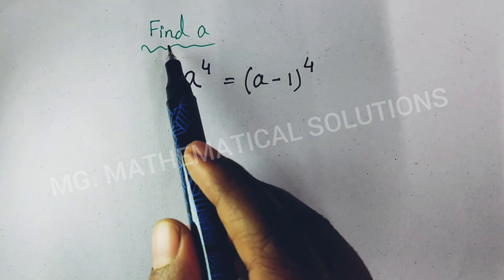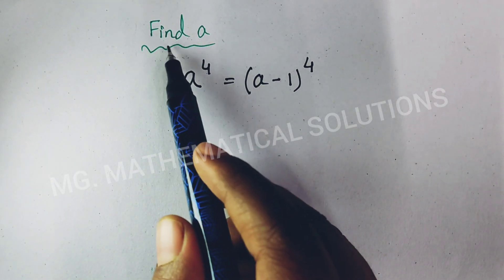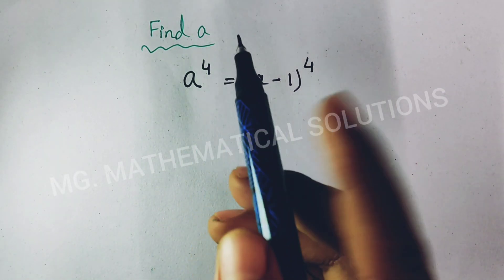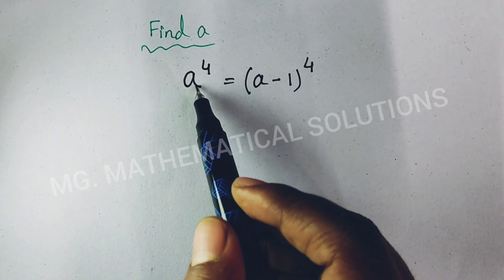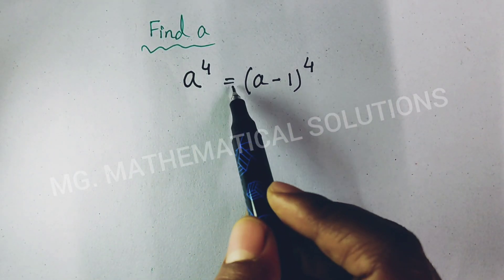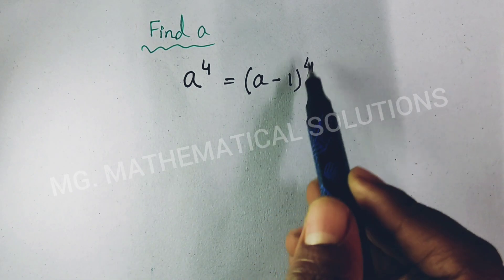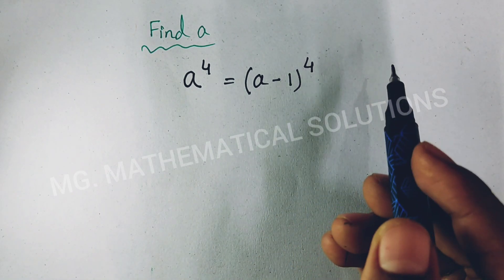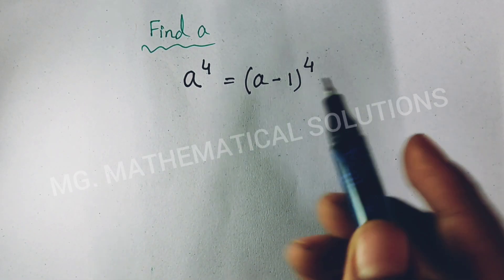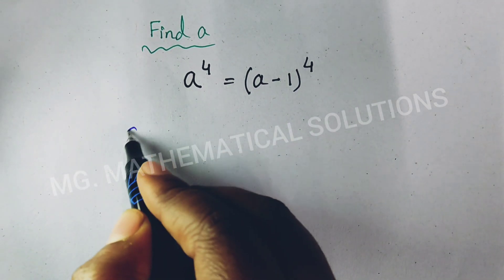Hi students. Today's question is: find a of the equation a to the power 4 equal to (a minus 1) whole to the power 4. Let's see how to solve.